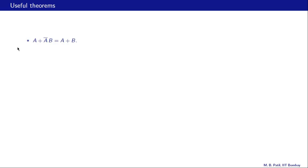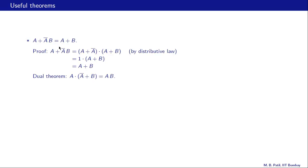Here is another theorem: a plus ā·b equals a plus b. We can use the distributive law to write a plus ā·b as (a plus ā)·(a plus b). Now a plus ā is 1, so it becomes 1·(a plus b), which is simply a plus b. That proves this theorem.